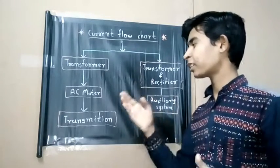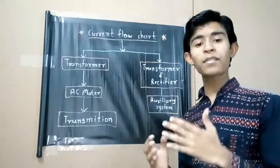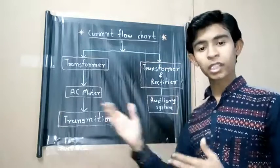And current finally reaches the AC motor. A flywheel is attached to the motor. So when we provide electricity to the motor, the flywheel starts to rotate and our locomotive is working.